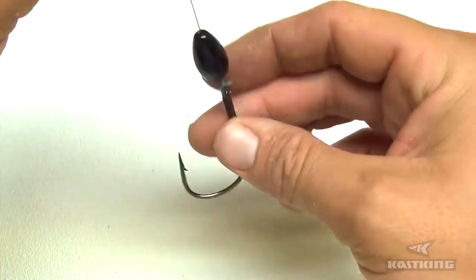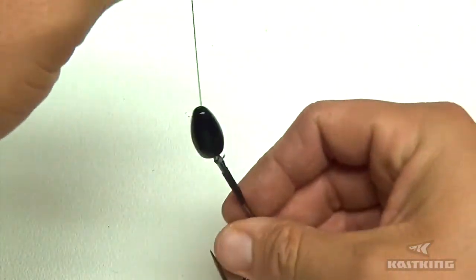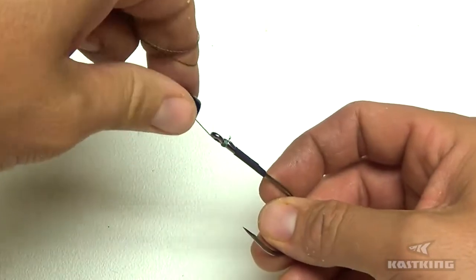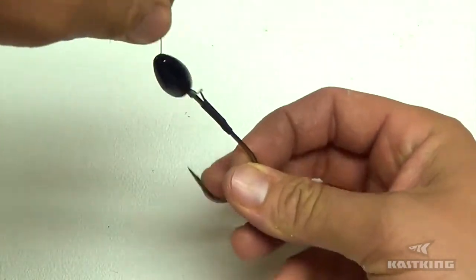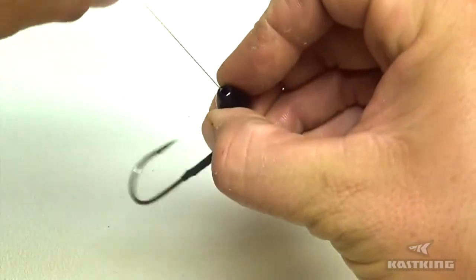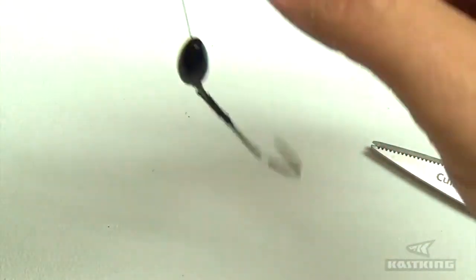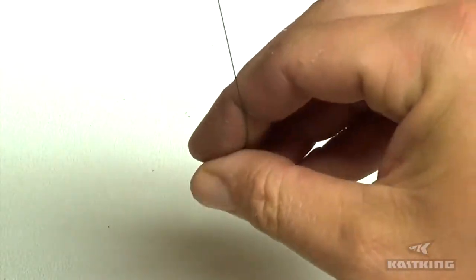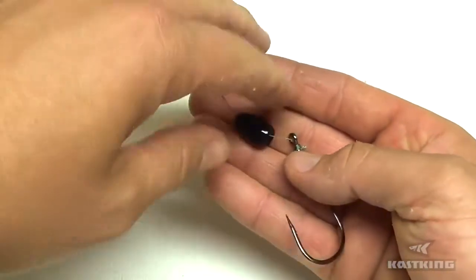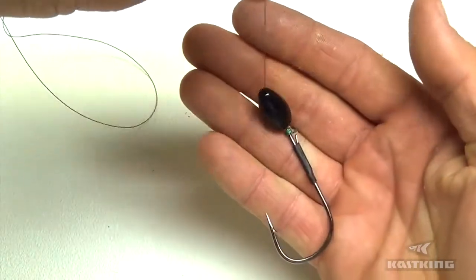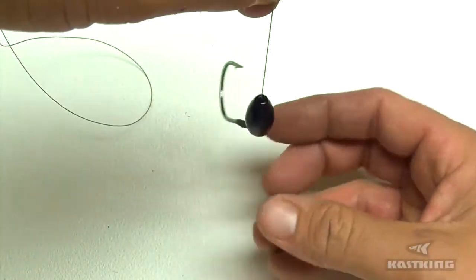What this snell knot does is the pressure of, like when you set the hook or just the pressure of this weight sitting on top of the hook will do it too. Just watch what this hook does when this weight comes down on it. See how it kicks the hook off to the side like that? See if I can show you again. See that?